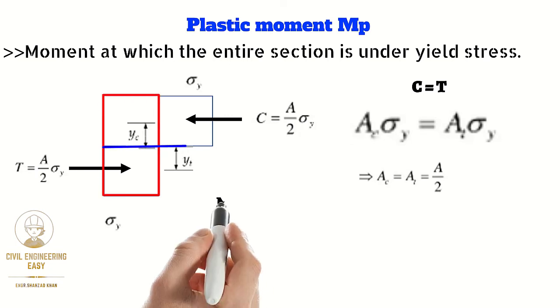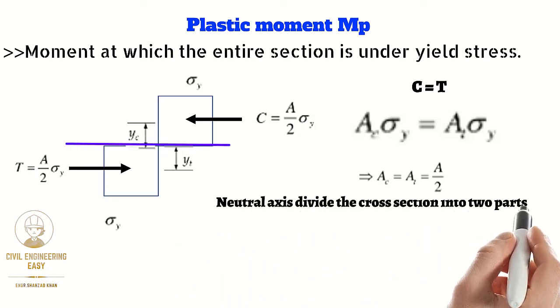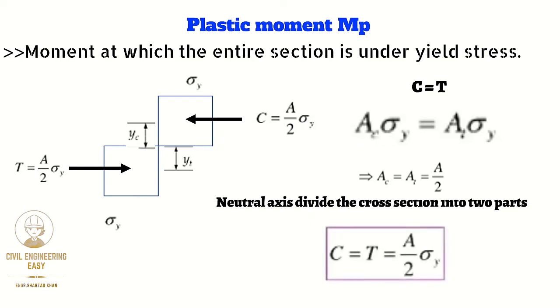The neutral axis basically divides the cross section into two parts, so the compression will be equal to tension, that is equal to A divided by 2 times yield stress. If we look into the change in stress distribution diagram, the C and T show the compression and tensile forces.